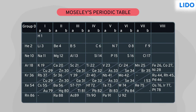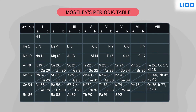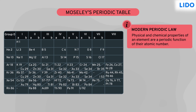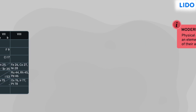He thus modified the periodic table, arranging the elements in the order of their atomic number instead of atomic mass. His discovery gave rise to the modern periodic law, which states that the physical and chemical properties of an element are a periodic function of their atomic number.